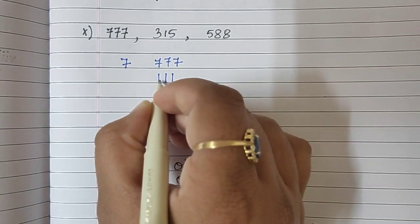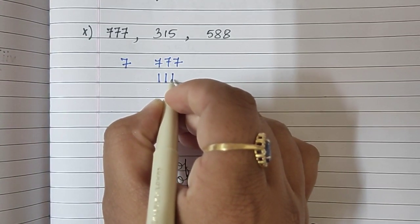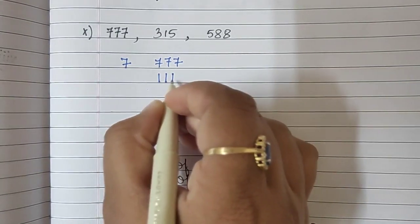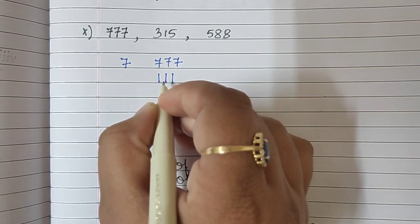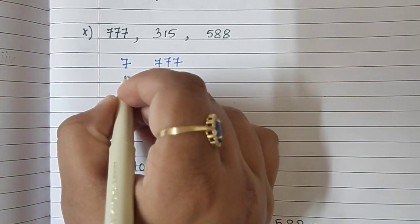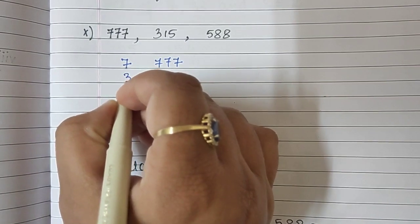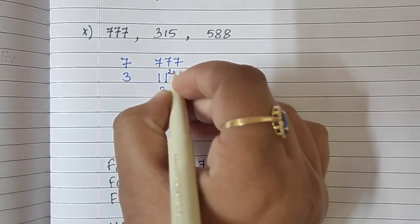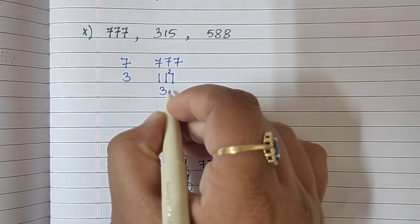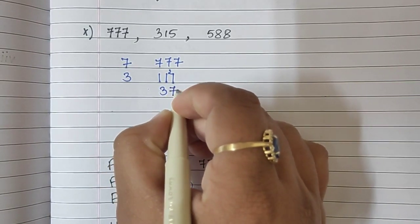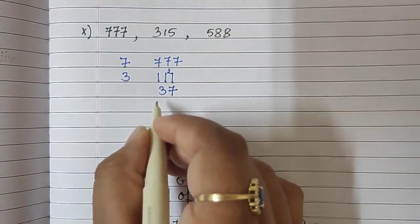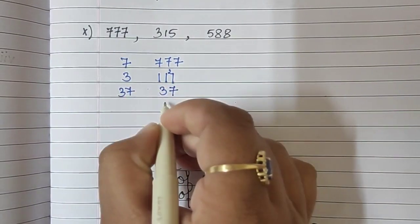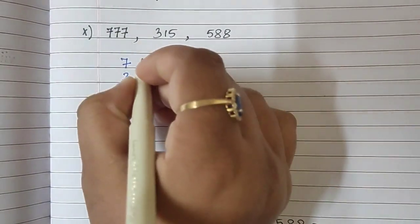When I add all the digits of 777, they are divisible by 3, so this number will also be divisible by 3. We write 3. 3 thirty-sevens are 111. And 37 is a prime number, so 37 ones are 37. So 777 equals 7 into 3 into 37.